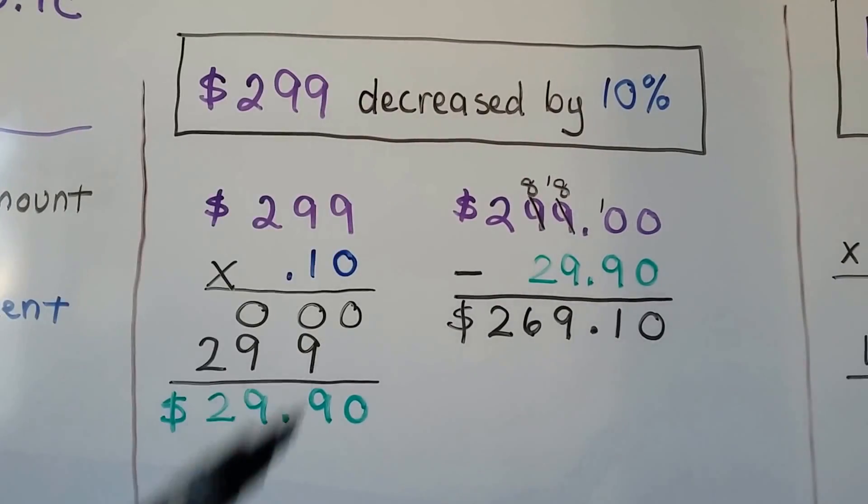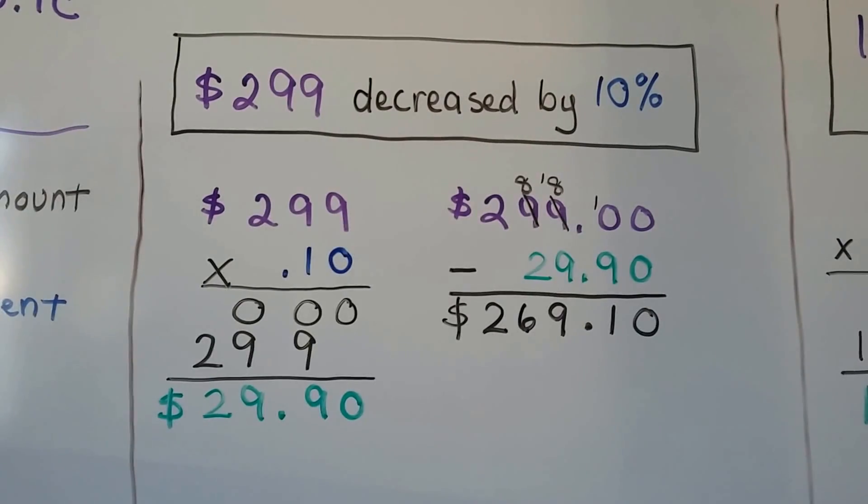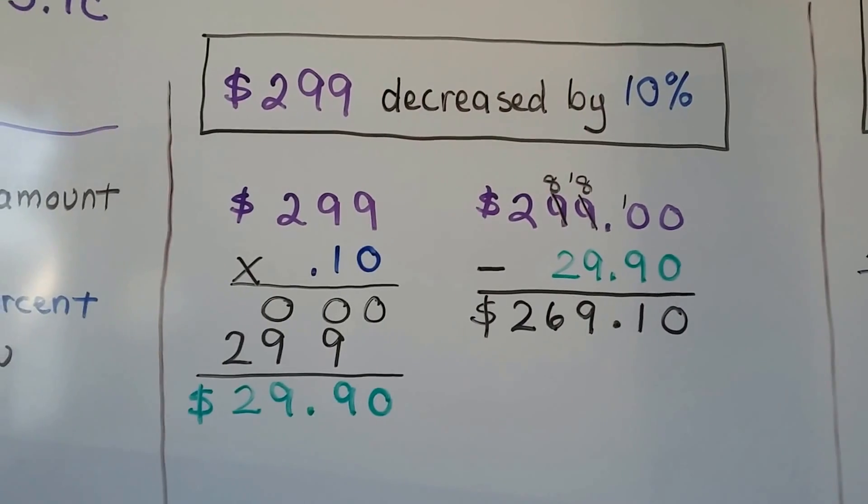Now, because it's a decrease, we're going to subtract it from the original amount, $299, and we get $269.10. That's the sale price.